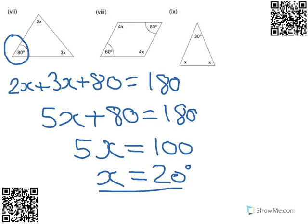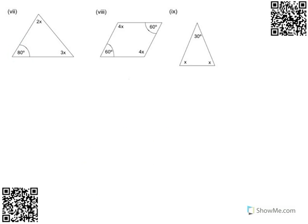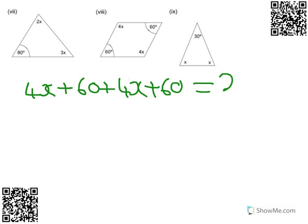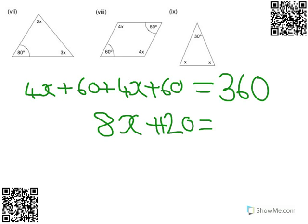Let's try the next question. In the second question, we've got a quadrilateral. So this is going to equal 360 degrees. So let's add up what we've got. We've got 4x plus 60 plus 4x plus 60. It's a quadrilateral, so it equals 360 degrees. We've formed the equation. Let's simplify it. So there's 8x plus 120 equals 360.